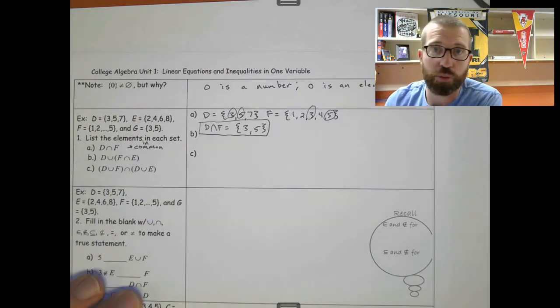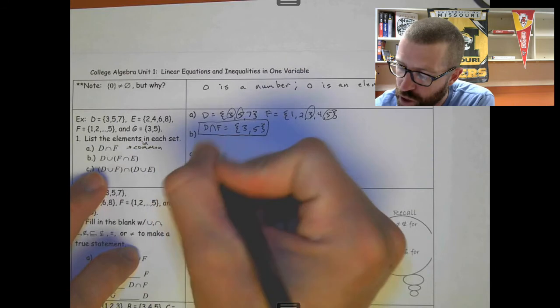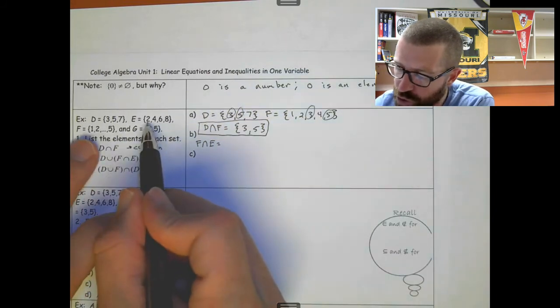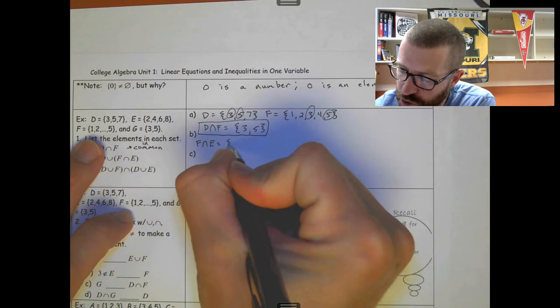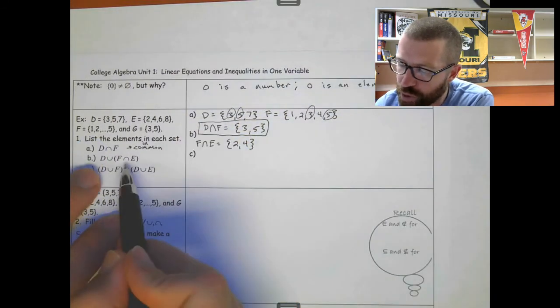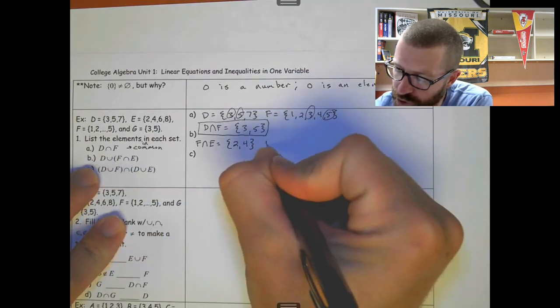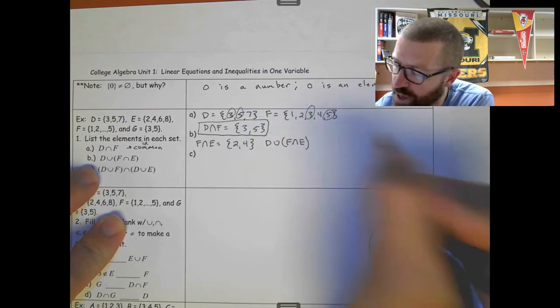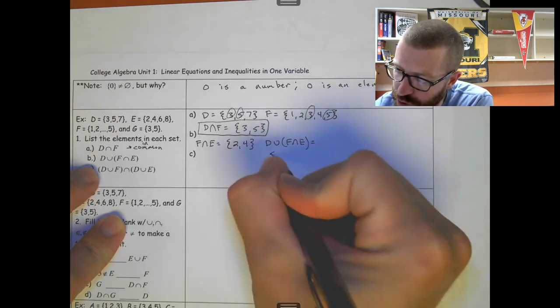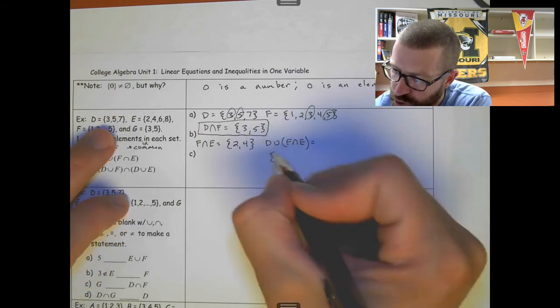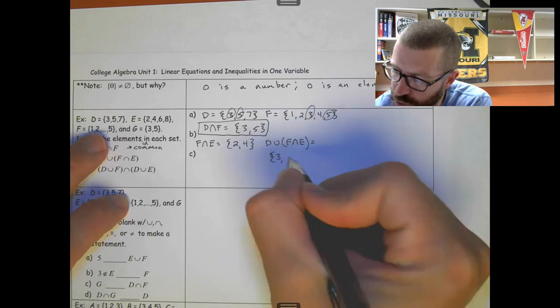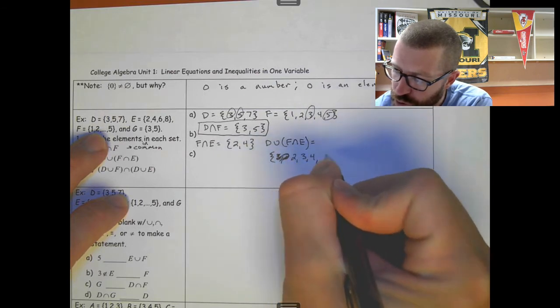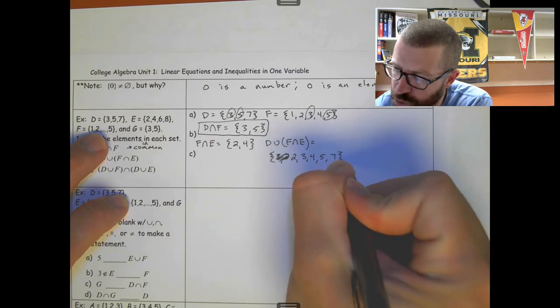Okay, so if you have parentheses like this, it's like order of operations. Find what's in the parentheses first. So, let's find F intersect E. So, F and E, what do they have in common? Well, they both have a 2, and they both have a 4. So, this is going to be the set 2, 4. And now we're going to union that with D. And so, we have D union F intersect E. This is just everything that they have. So, we'll put that on the next line here. So, D is 3, 5, 7. So, 3, and then I'm going to combine that with 2. Let's change the order there. 2, 3, 4, 5, and 7 would be the union of those two sets.